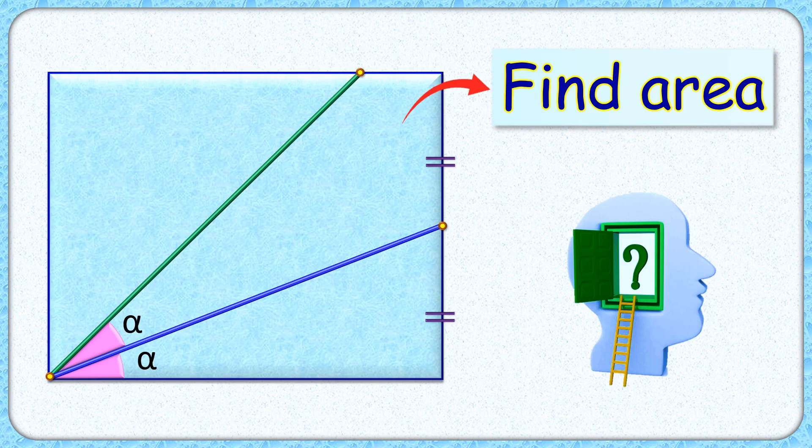In this interesting question, given is a rectangle with this point as midpoint of the side length. These two angles are equal. With the given dimensions, we have to find the area of the rectangle.